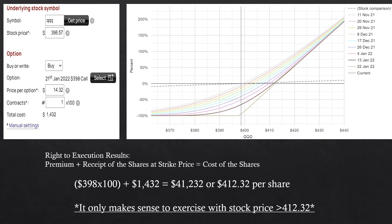I need the price to go above $412.32 in order to actually profit by getting 100 shares for less than what they're currently trading at — receiving the excess over the cost of the contract plus the strike price. So I receive shares for a lower price than they're currently trading at. You can either execute this contract and make even more money, or you can just buy multiple contracts and sell the contracts as they go up. All of these have different risks that we need to be considerate of.